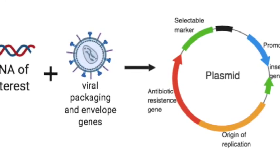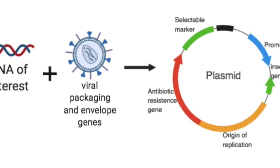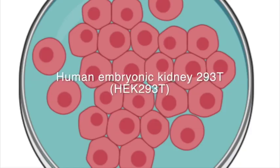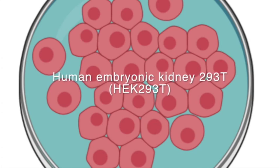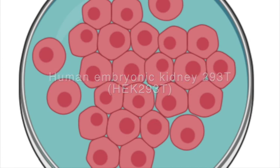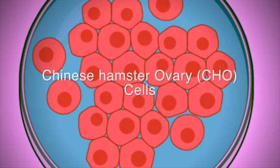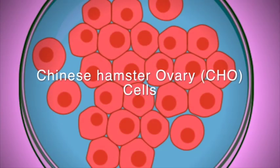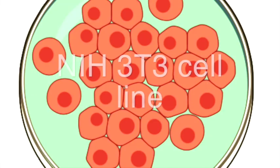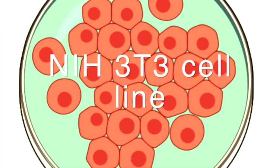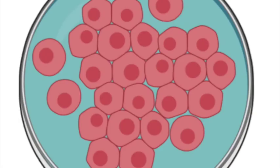Cell lines that express viral proteins such as the HEK293T, which stands for human embryonic kidney cells, are the most common cell lines used for packaging. Other packaging cell lines that can be used include Chinese hamster ovaries or CHO cells and NIH3T3, which allow you to create virions capable of transducing a target cell line.